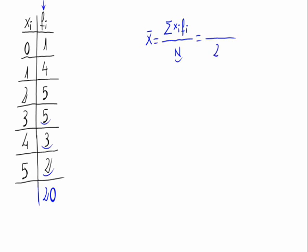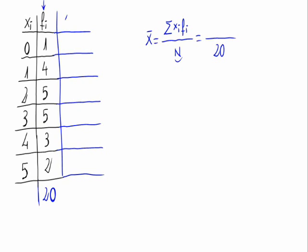Now for the numerator, for the summation of x sub i times f sub i, let's create a new column: x sub i times f sub i.